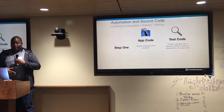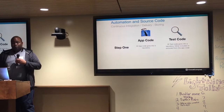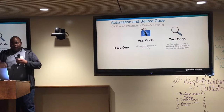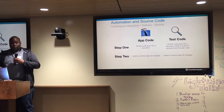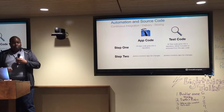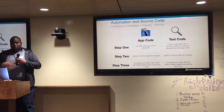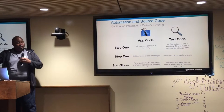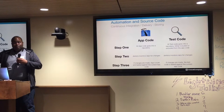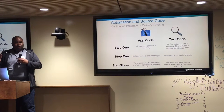We have two different repositories — one for app code and one for test code. All of our code goes into separate repositories. Jenkins monitors the repo for changes. If there's a change to the app code, it runs against the current test code. If there's any change to the test code, it runs against the current app code.